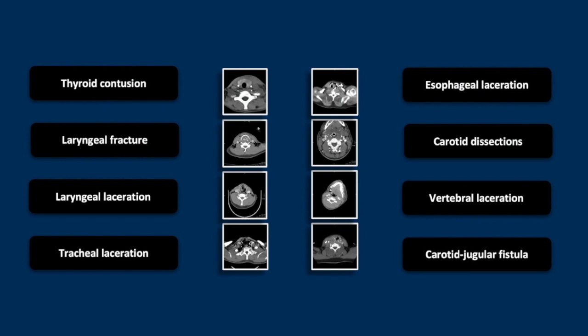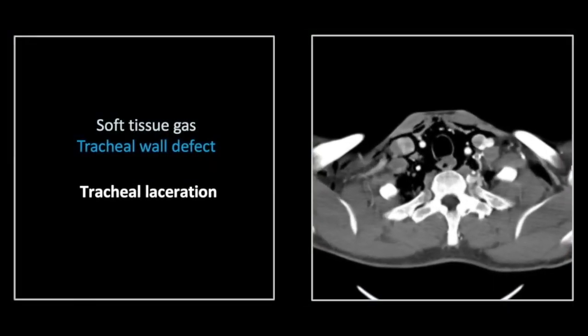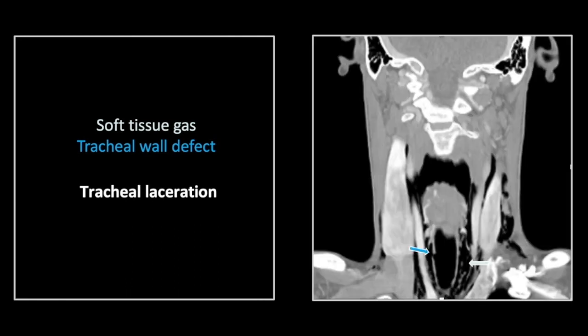Our next case is a tracheal laceration. This was a steak knife induced injury. A stabbing with a flat blade such as that can make a defect that is very difficult to spot. Your attention is directed to the airway by this extensive soft tissue gas. The defect itself is difficult to spot, encouraging you to use lung windows and to always rely on the orthogonal planes as well. Here you can see on the coronal, clearly demonstrated are the soft tissue gas and that right lateral tracheal defect.